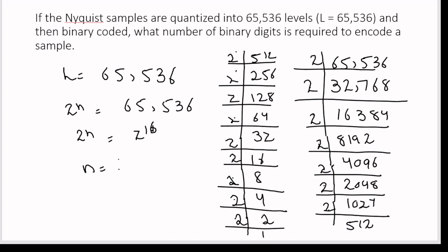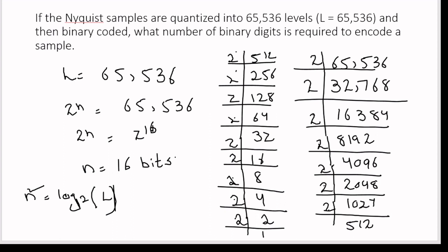Therefore n equals 16, meaning 16 bits are required to encode each sample. We can also solve this using logarithms: n equals log base 2 of 65536, which gives n equals 16 bits. So to encode each sample we need 16 bits.